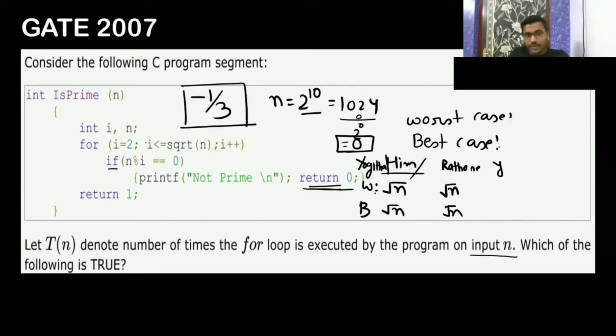So whenever this if condition satisfied and in best case, in the first iteration only this condition will get satisfied. Only once this whole loop is going to iterate. Best case is going to be Omega of 1.